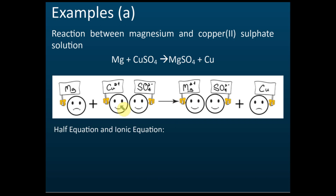In displacement reactions, a stronger, more reactive, or more electropositive metal kicks out a metal ion which is less reactive or less electropositive. For displacement of metals, there are a few things you need to know. First, you must know how to write the half equations. The half equations only involve the metal and the metal ions — they do not involve the negative ions.